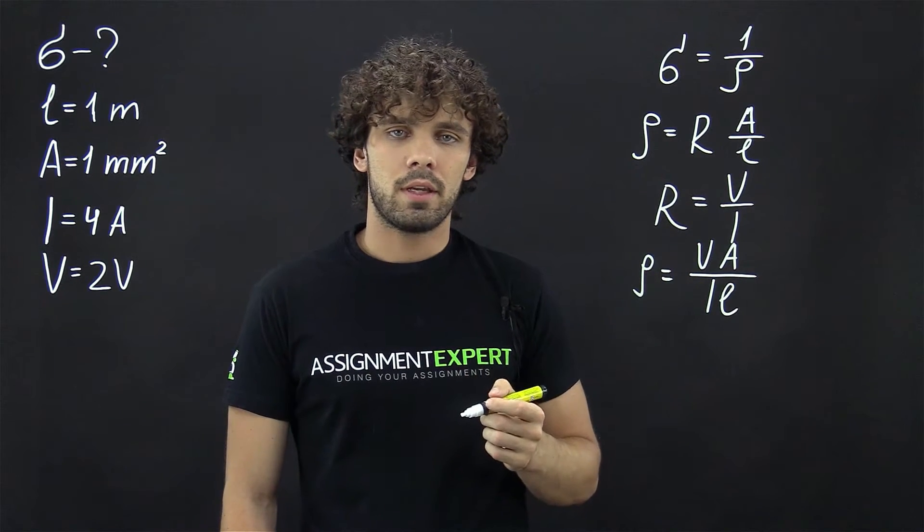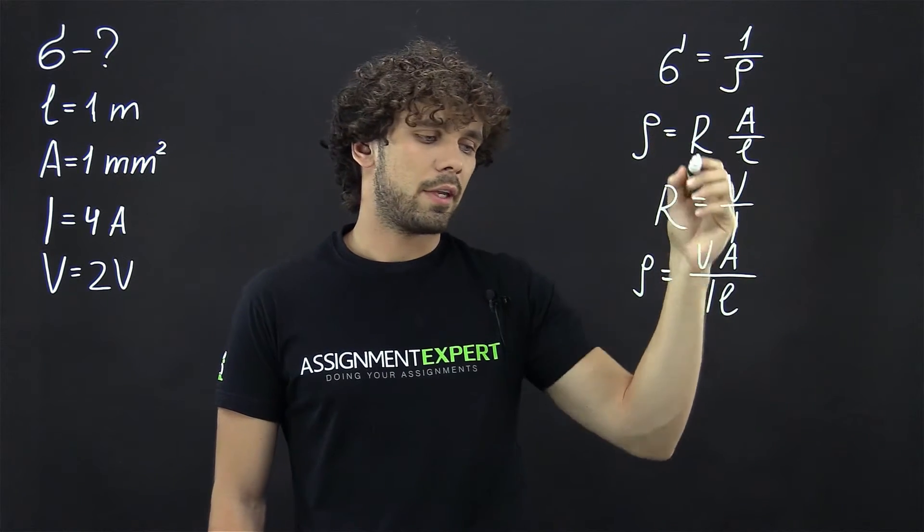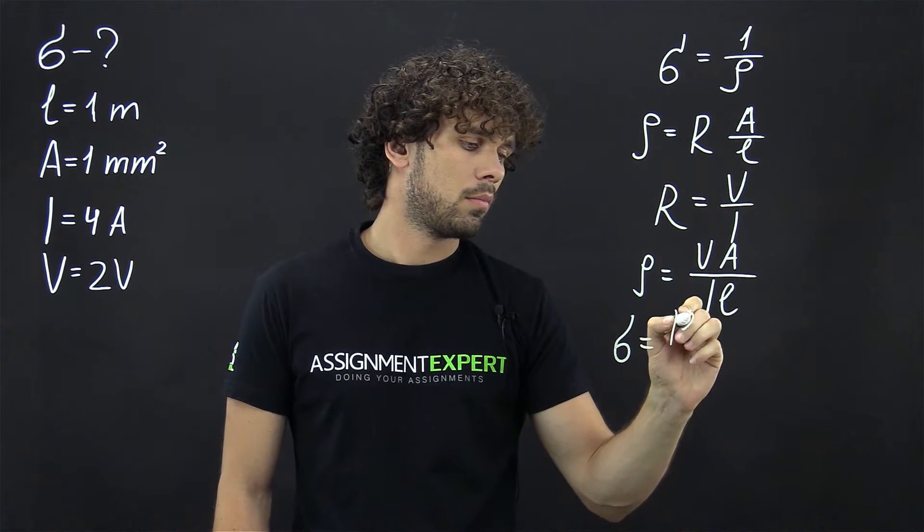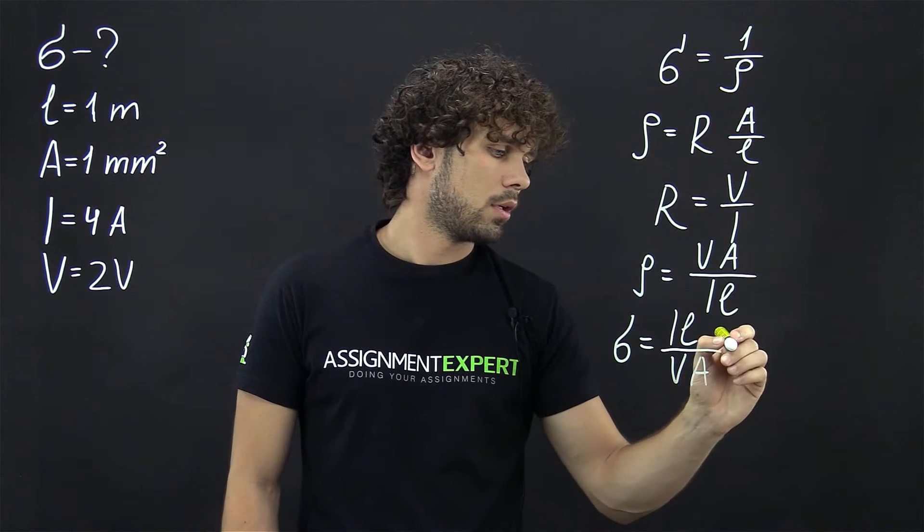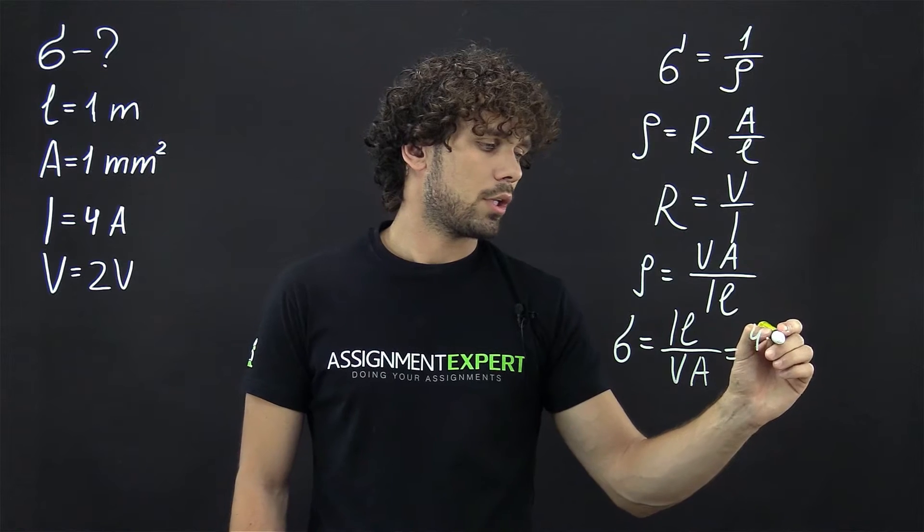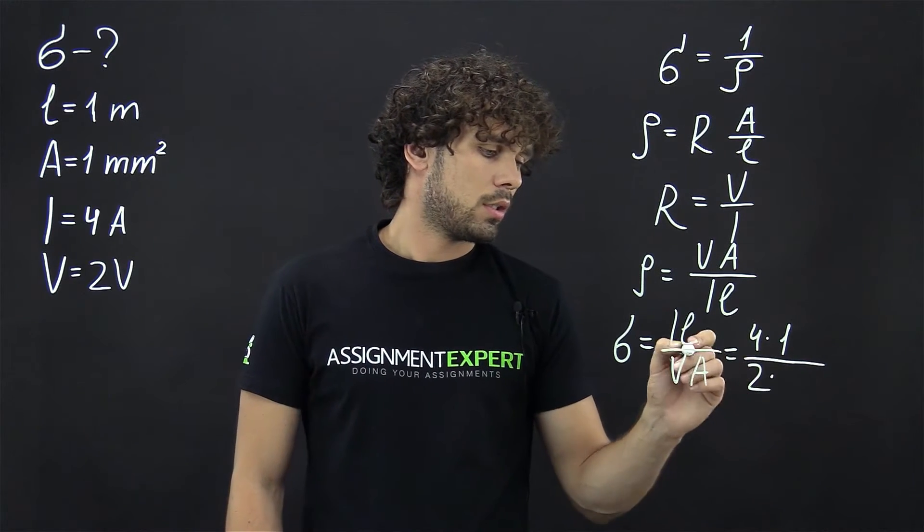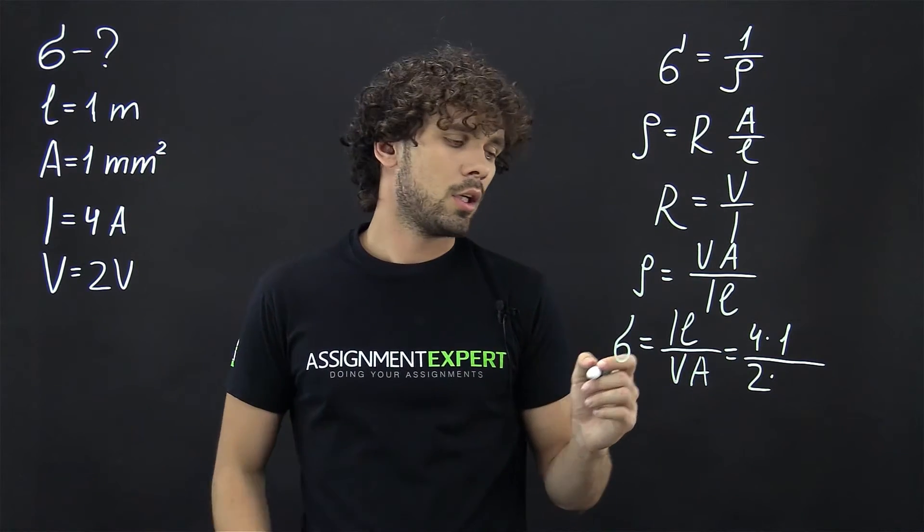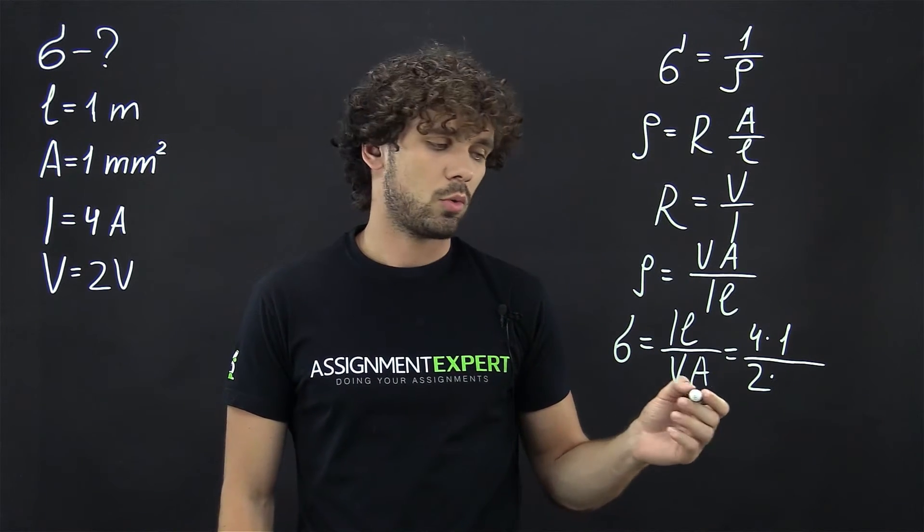So this is our resistivity, and now we need to reverse this formula to get conductivity. Sigma equals I L over V A, and in our case this is 4 times 1 over 2 times the cross section. We have it in millimeter squared, so here we need to add 10 raised to the negative 6 power to get meter squared.